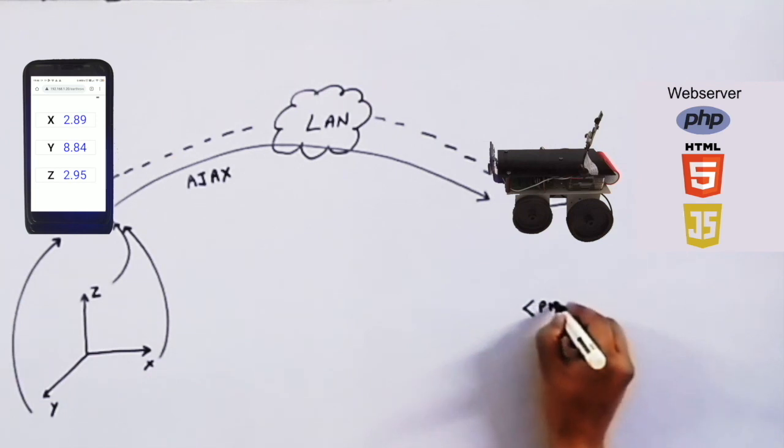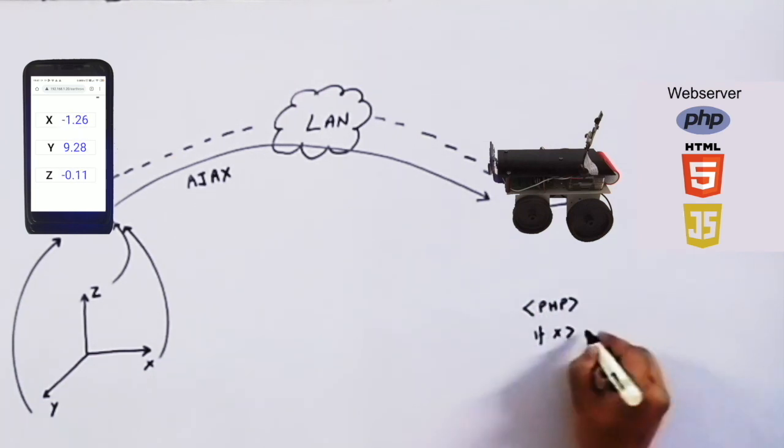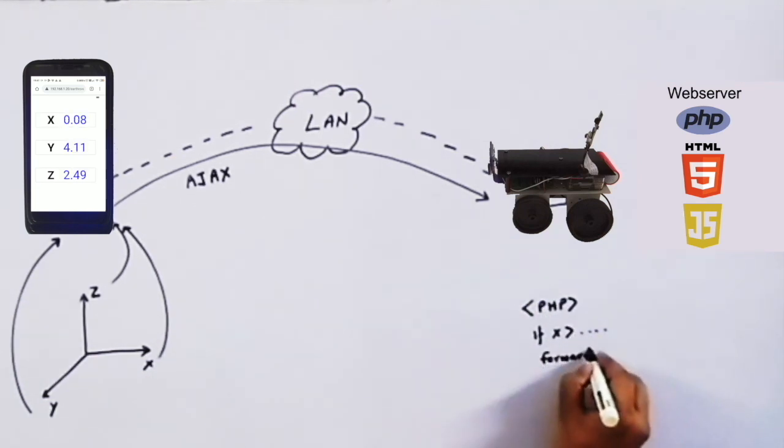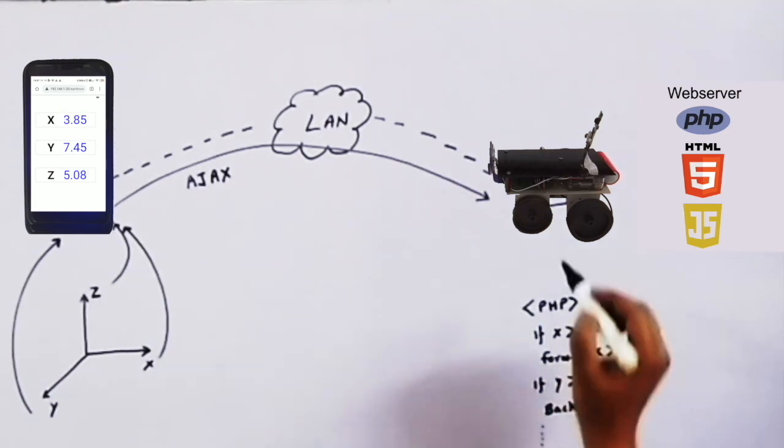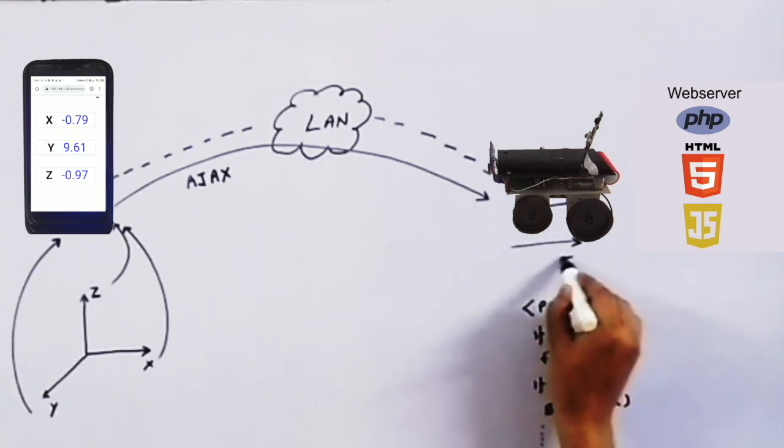At the server, a PHP file receives these X, Y and Z values and based on these values it makes relevant GPIO pins high or low to control the motors in forward or backward direction.